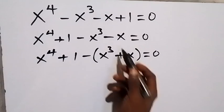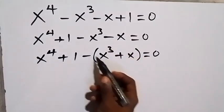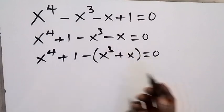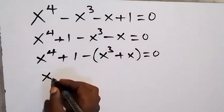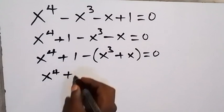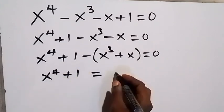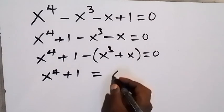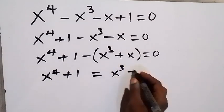We have taken minus out, so what we have here will be plus. From here, let's separate this to the right-hand side, and we have x raised to power 4 plus 1 equals — when minus comes there it becomes plus — x raised to power 3 plus x.